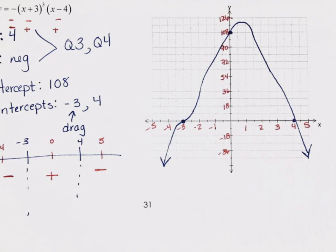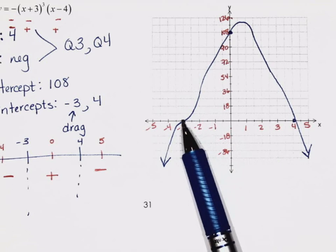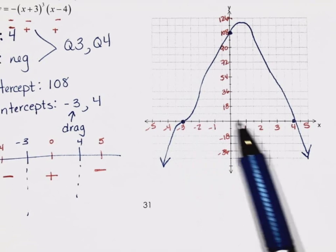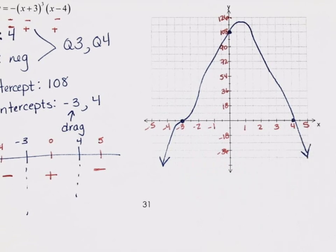Looking at your graph, is the drag distinct from the cut? When you send me a graph, I need to see a difference between these two x-intercepts. I'm not looking for perfection — I'm looking for them to be clearly different. What points would you label? X-intercepts and y-intercepts. Don't overthink it — don't work harder than you need to.